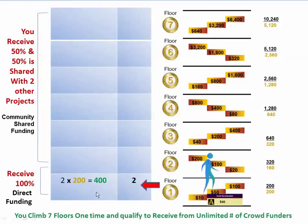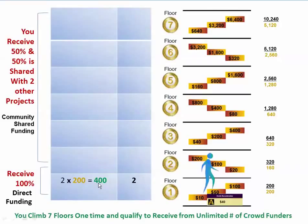Let's start with the first example. Remember in our model we had two who found two, who found two, and so forth. Start with two project managers that you find who make a one-time $200 donation to you, and you receive $400 for your project. On the first floor, we call it direct funding and you get 100% of that — so you receive $400.